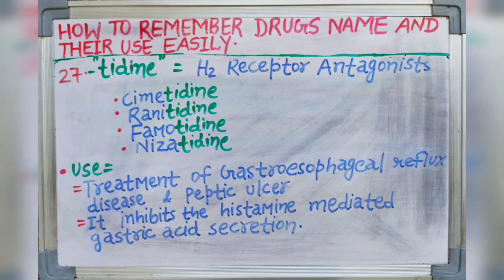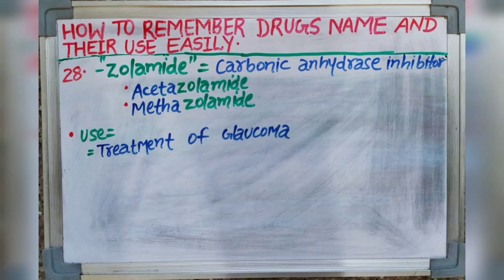The last suffix is -zolamide. Zolamide indicates carbonic anhydrase inhibitors. Drugs like acetazolamide and methazolamide are used in treatment of glaucoma.